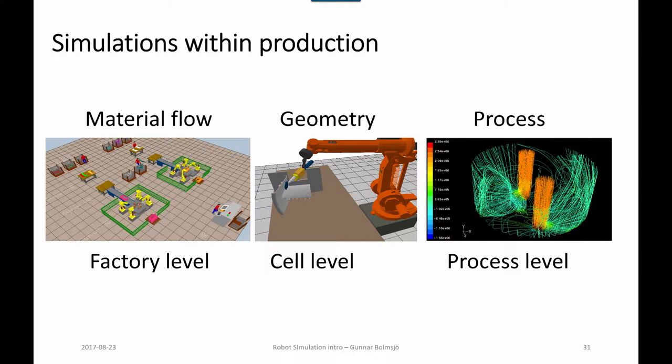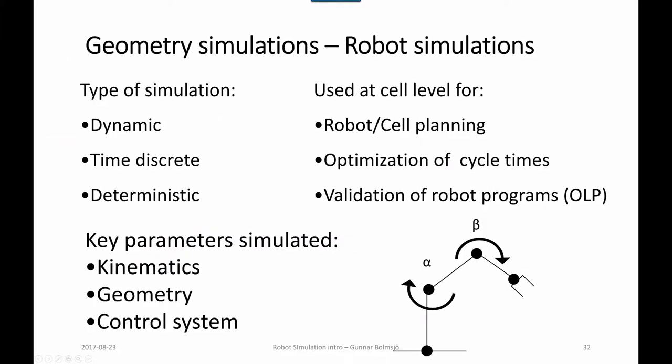Within the system are the various processes, which could be whatever is going on in the cell—arc welding, bin picking, thermal spray, grinding, polishing, whatever—which usually has to be controlled in some way.